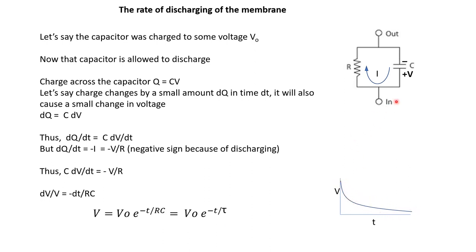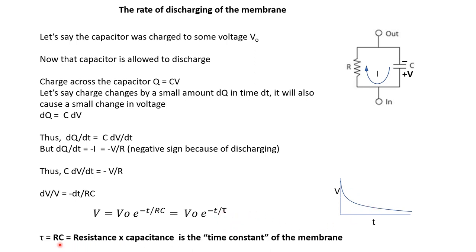This factor τ is very interesting — it is the factor that determines how fast or slow the capacitor would charge, and τ = RC. It is known as the time constant of the membrane. One very interesting feature of this time constant is that it does not depend on the area of the membrane. If you have a larger membrane, your capacitance would be larger in proportion to the area, and the resistance would be smaller in proportion to the area, so the product R times C still remains the same — whether you have a larger membrane or a smaller one. So τ depends only on the properties of the membrane: the density of ion channels and the thickness of the membrane, but not on the surface area.